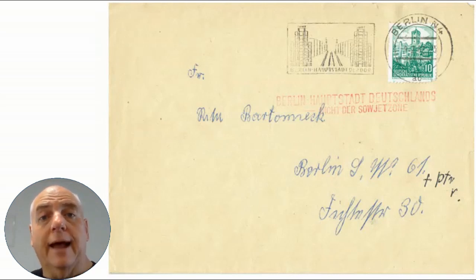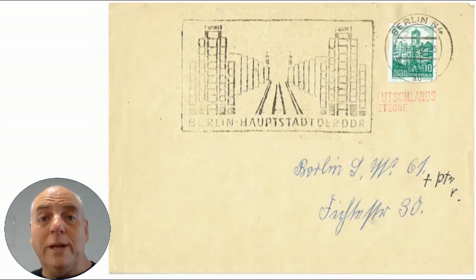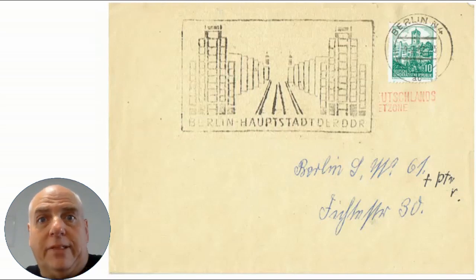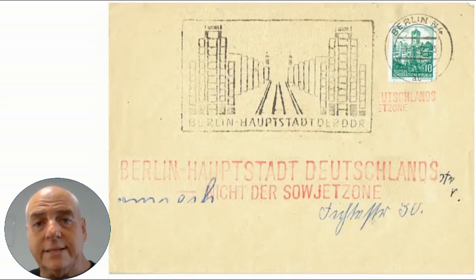Here we see a letter sent from East Germany to West Germany, or basically to West Berlin. East Germany had a special cancel, and you can see it here — the translation from German says Berlin is the capital of East Germany. When it arrived in West Berlin, they were insulted and upset because they wanted Berlin as their capital too. So they put another slogan on it saying: 'Berlin is the capital of Germany, not the Soviet zone' — a direct insult to East Germany, calling it the Soviet zone and not a real country.